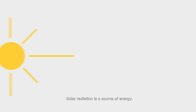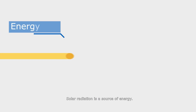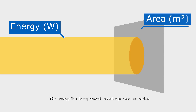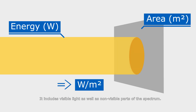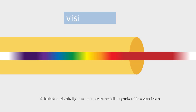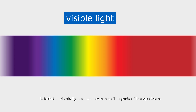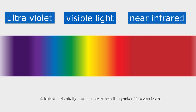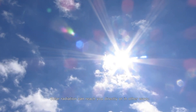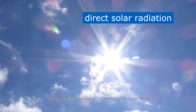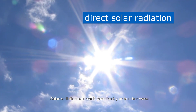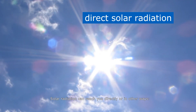Solar radiation is a source of energy. The energy flux is expressed in watts per square meter. It includes visible light as well as non-visible parts of the spectrum. Solar radiation can reach you directly or in other ways.